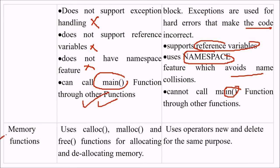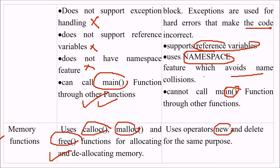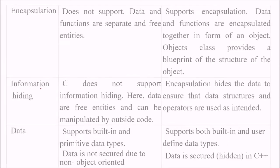What about memory functions? C uses calloc, malloc, and free for allocating and de-allocating memory. C++ uses new and delete for the same purpose.